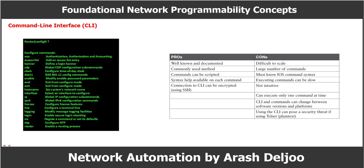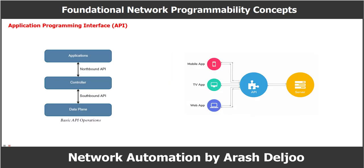There are programmatic ways of accomplishing the same configuration that are possible with the CLI. The first is the Application Programming Interface, or API. Another very popular method of communicating with and configuring a network is through the use of APIs. APIs are mechanisms used to communicate with applications and other software, and are also used to communicate with various components of the network through software. There are multiple different types of APIs; however, the focus of this video is on two of the most common: the Northbound and Southbound APIs.